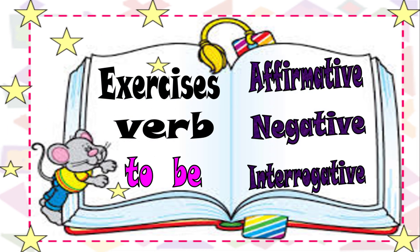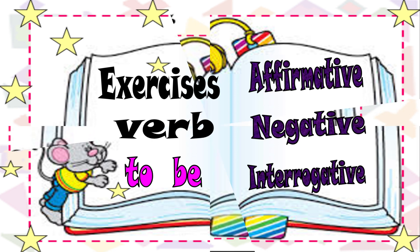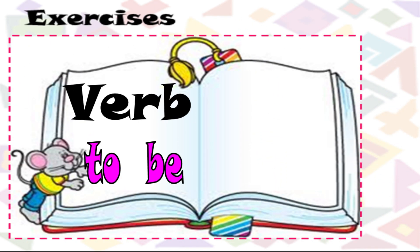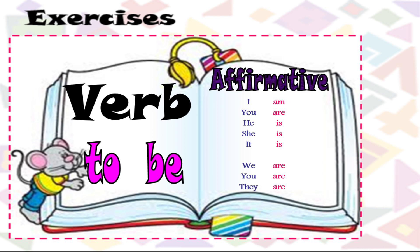Practice and exercises. Let's recapitulate the affirmative of verb to be: I am, you are, he is, she is, it is, we are, you are, and they are.